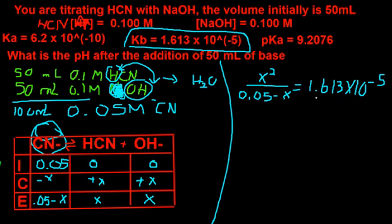And you do all your algebra, and you do your quadratic formula, and you get x equals 8.9002 times 10 to the negative 4. And you know x is equal to the concentration of your hydroxide ion.